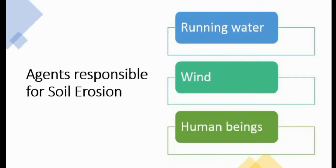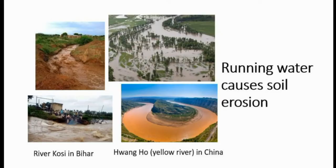What are the agents responsible for soil erosion? These are running water, wind, and human beings. First, we will see how running water causes soil erosion. As you can see in the figure, heavy rain causes floods, and flooded rivers and running water remove the topsoil. Running water also washes the soil off from the hill slopes, making those slopes unfit for cultivation.